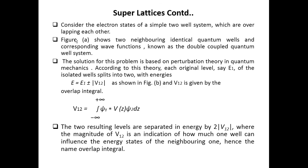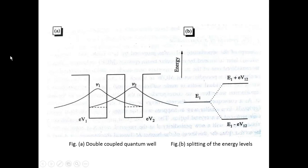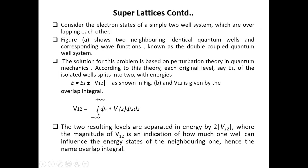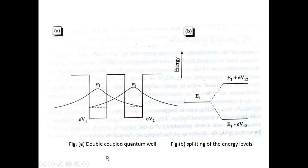Consider the electron states of a simple two-well system. The first well has a wave function φ₁, the second well has an electron wave function φ₂, and here Ev1 and Ev2 are the energy levels. Figure (a) shows two neighbouring identical quantum wells with corresponding electron wave functions — this type of system is known as a double coupled quantum wells system. The energy level E₁ is split into E₁ + |V₁₂| and E₁ − |V₁₂|, showing the splitting of the energy level.